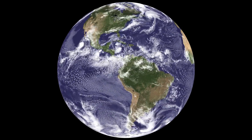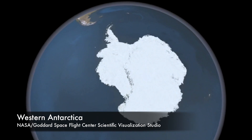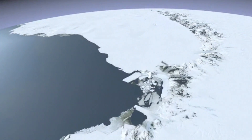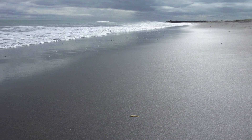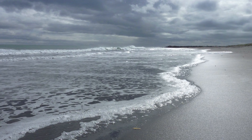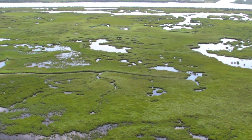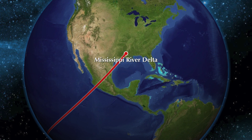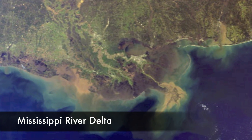The Earth has undergone dramatic change over its geologic history. As the Earth has cooled and warmed, ice fields have advanced and receded. During warming periods, ice melts and water expands, causing sea level rise. Scientists are studying how sea level rise may affect coastal wetlands. A key study site is the Mississippi River Delta, which is experiencing high rates of relative sea level rise due to rapid land subsidence.